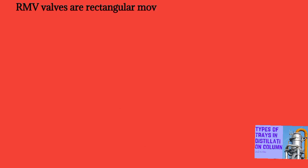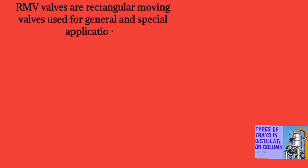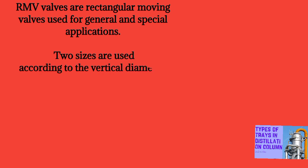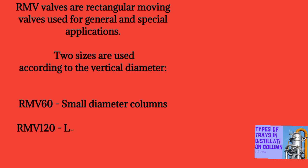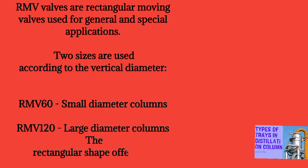RMV valves are rectangular moving valves used for general and special applications. Two sizes are used according to the vertical diameter: RMV 60 for small diameter columns and RMV 120 for large diameter columns. The rectangular shape offers the following main advantages.